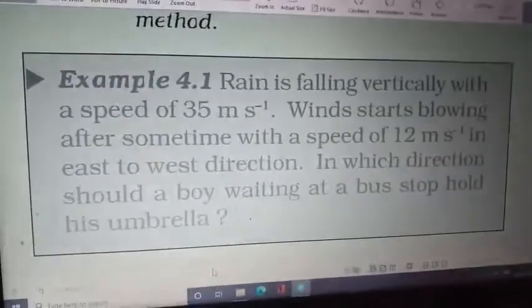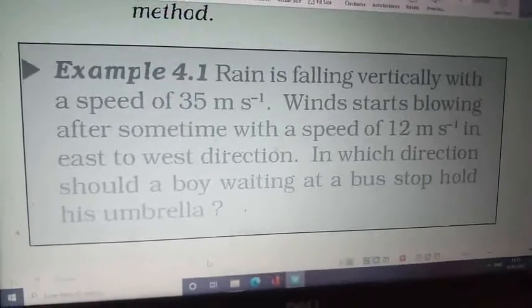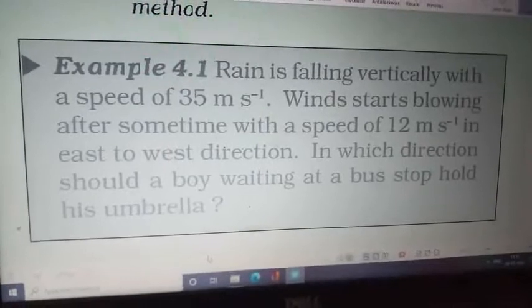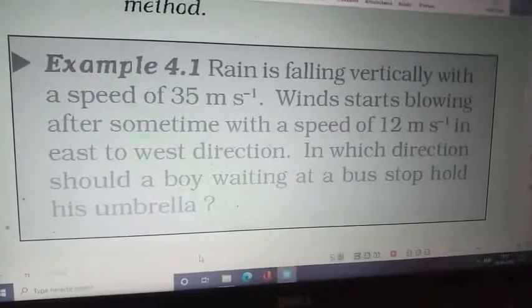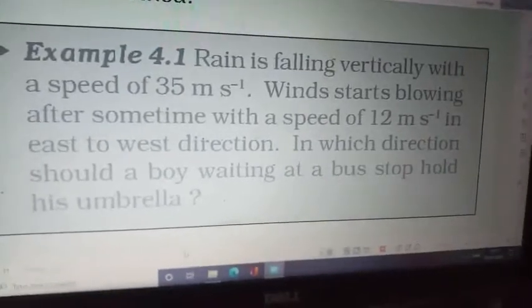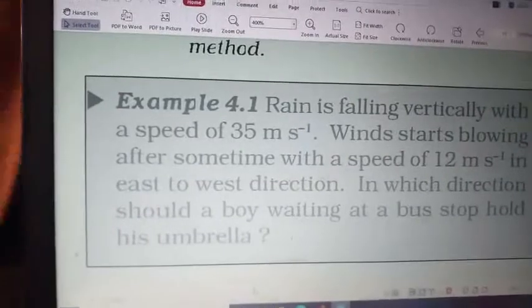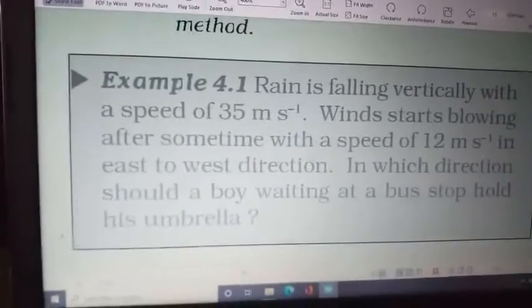Example 4.1: Rain is falling vertically with a speed of 35 meter per second. Winds start blowing after some time with a speed of 12 meter per second in east to west direction. In which direction should a boy waiting at a bus stop hold his umbrella?